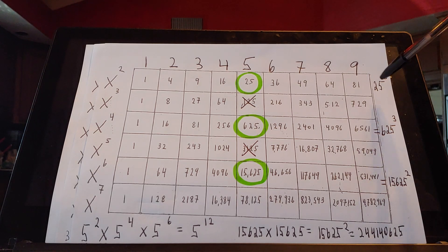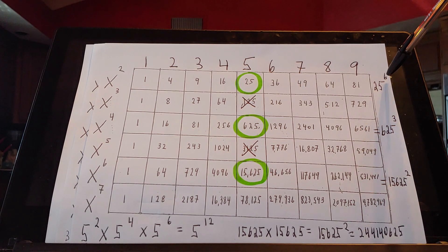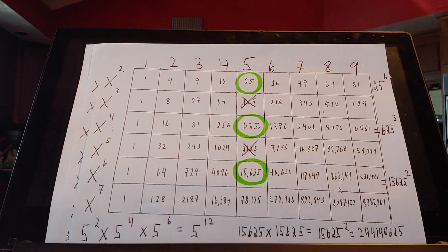And we can see this is an important sequence, because this is how you understand how you get numbers from one exponent to the other.